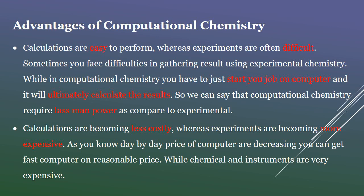Calculations are becoming less costly, whereas experiments are becoming more expensive. Day by day, the price of computers is decreasing - you can get a fast computer at a reasonable price, while chemicals and instruments are very expensive.